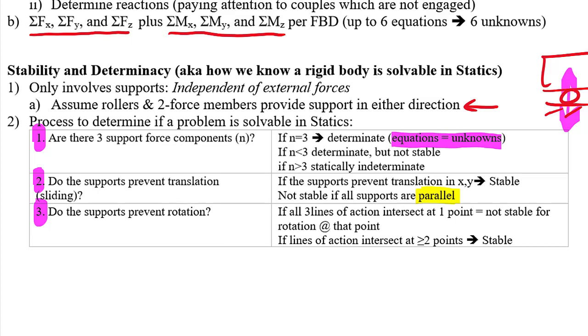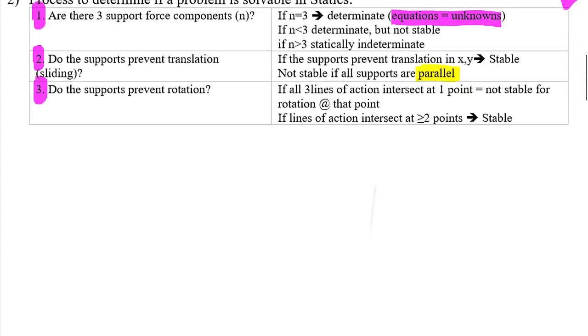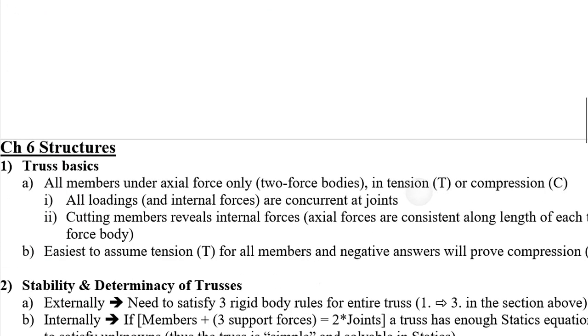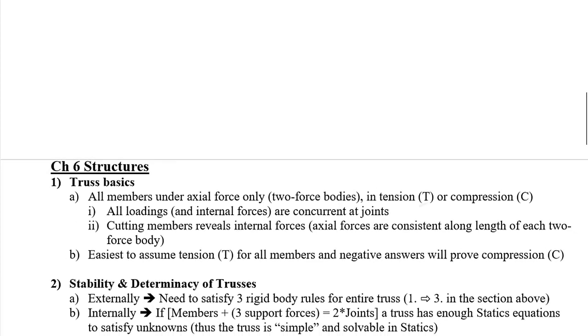Step two is stability for translation — we do not want parallel supports, as they would not prevent motion perpendicular to that direction. Step three, for preventing rotation: the lines of action must intersect at two or more points. One single intersection point for all three lines of action is a bad thing — the body is not stable about that point. That wraps up chapter five.